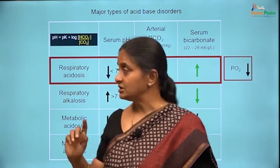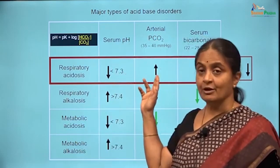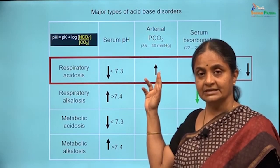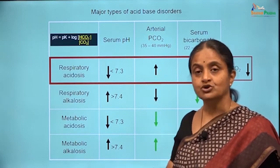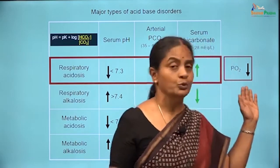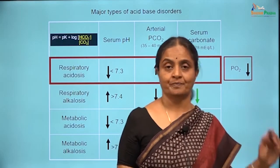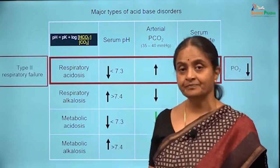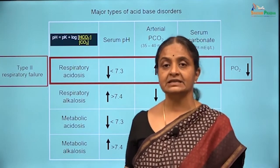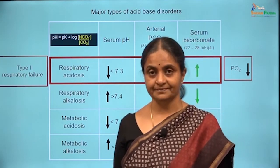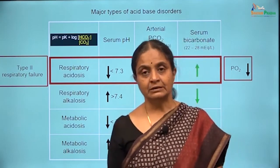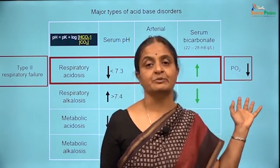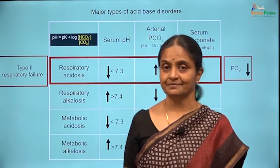Respiratory Acidosis is a condition where carbon dioxide is high, and when carbon dioxide is high, almost always oxygen will be low. This is what is referred to as type 2 respiratory failure, where both gases are affected. This may be referred to as an obligatory hypoxia. The details will be dealt with in respiratory physiology.